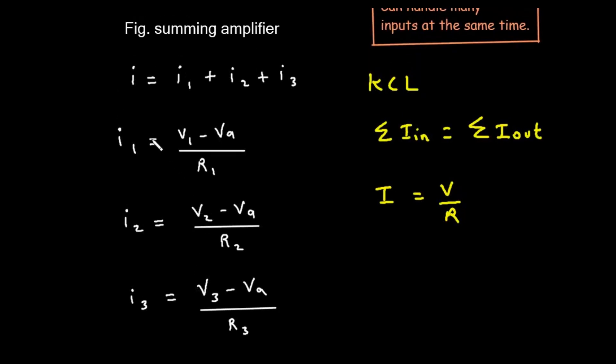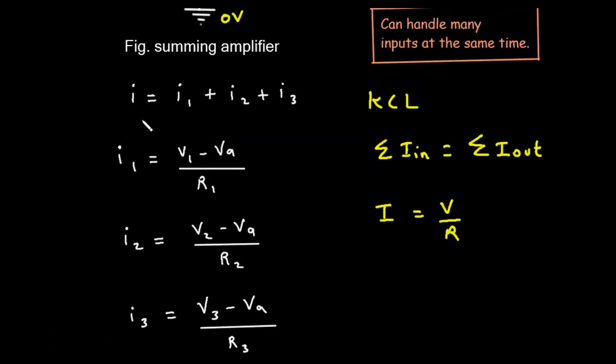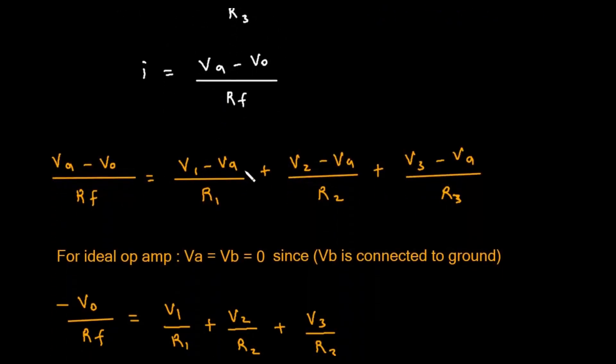Now we have an expression for every single current. We can now substitute all of these individual expressions back into our first equation from Kirchhoff's law. This gives us the long equation you see in the middle of the screen. Let's read it out loud.